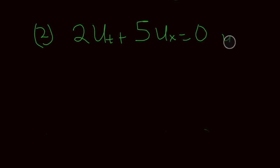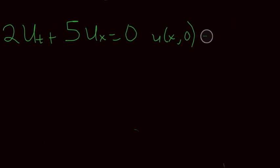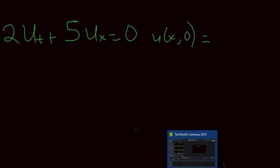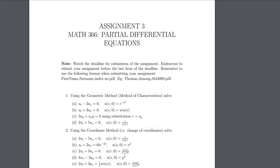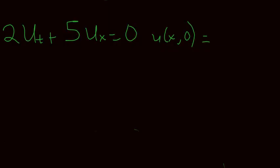My initial condition is u(x, 0) equal to 1 divided by 1 plus e to the power x. So this is the question: I have 2u_t plus 5u_x equal to 0.